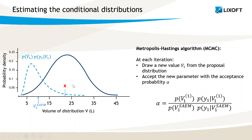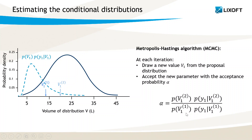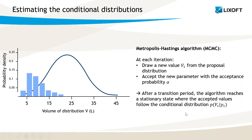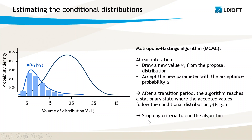If the value is rejected, a new value is drawn until a candidate is accepted based on this probability. Then at the second iteration, the reference used in the acceptance rate is the value accepted at the first iteration. The next iterations follow the same procedure. The accepted values cover the whole distribution because the acceptance rate allows enough flexibility to accept some values that may be far from the peak. So after a transition period, the algorithm reaches a stationary state where the accepted values follow the conditional distribution, and together they represent an estimation of the distribution.